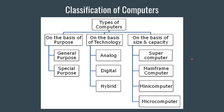The last classification is on the basis of size and capacity, which is very important. For example, for a layman who just works on Excel sheets, it would be pointless to purchase a supercomputer or mainframe for his home — he simply does not need to operate a computer to that degree.